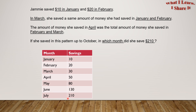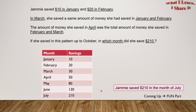See, we reached the savings that we were looking for: $210. So, Jami saved $210 in the month of July. Yay, we solved the problem! Coming up is the fun part, and that is...